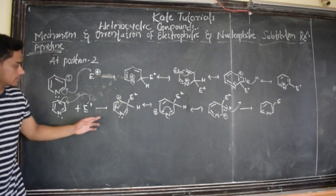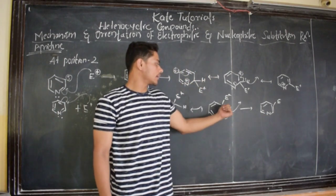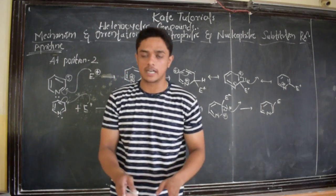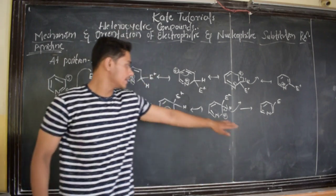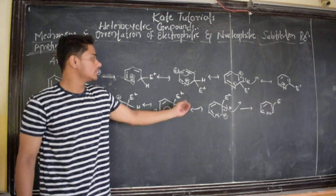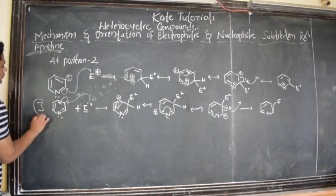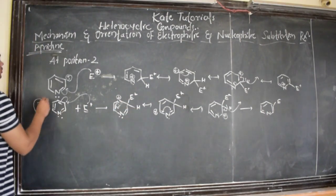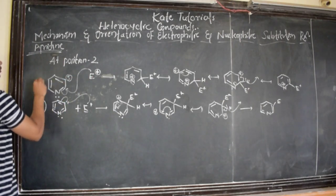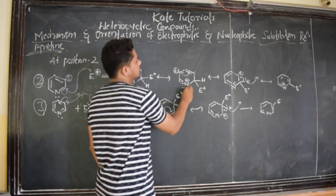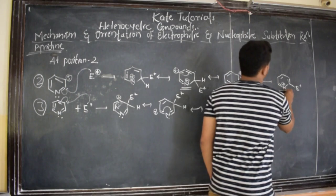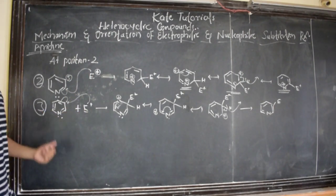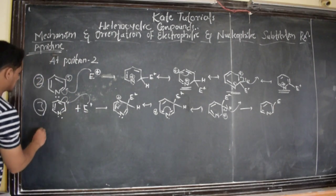In this resonance, the nitrogen did not get any positive charge. The carbon got positive charge — they become carbocations. Nitrogen did not get any positive charge. Since nitrogen is electronegative, it cannot have positive charge, and here it has not got any positive charge. So the electrophile will attack at position 3.